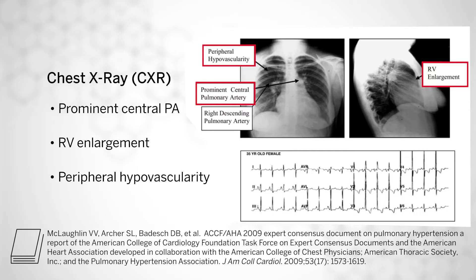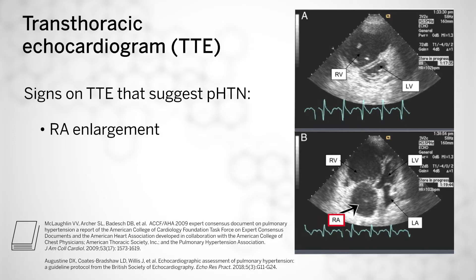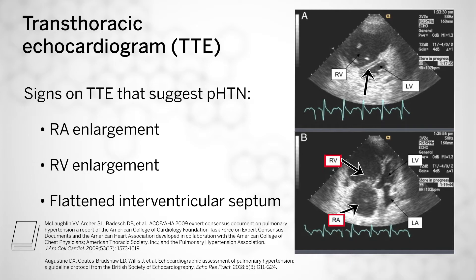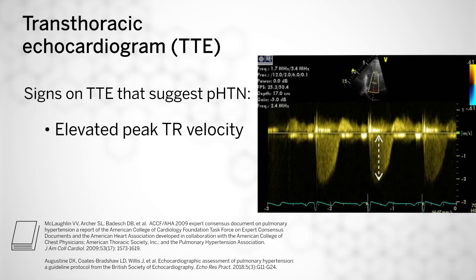Another diagnostic tool that is very helpful is an echocardiogram. On TTE, findings that could suggest pulmonary hypertension include right atrial enlargement, seen on the bottom right of the screen, as well as RV enlargement. Other features include flattening of the septum, seen in the upper right of the screen, where the left ventricle is flattened by an enlarged right ventricle. In addition, the measurement of peak tricuspid regurgitation velocity by Doppler across the tricuspid valve is very helpful in suggesting pulmonary hypertension.